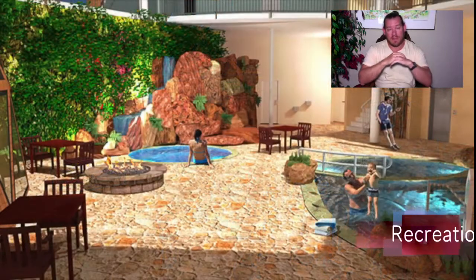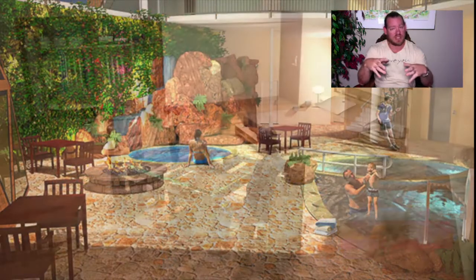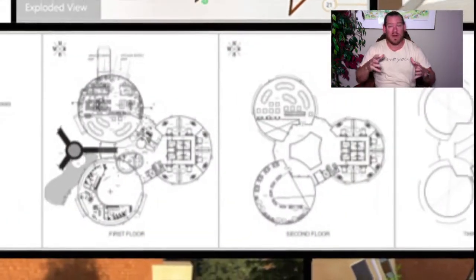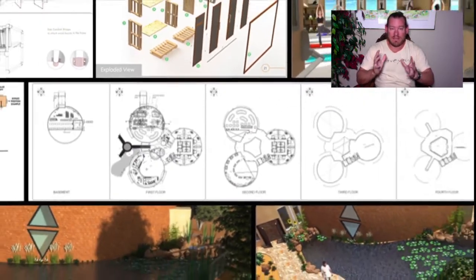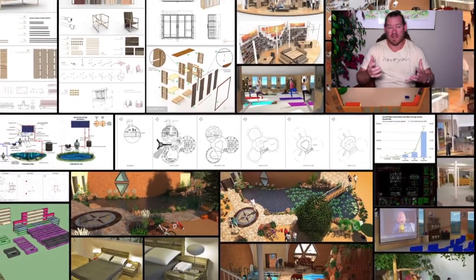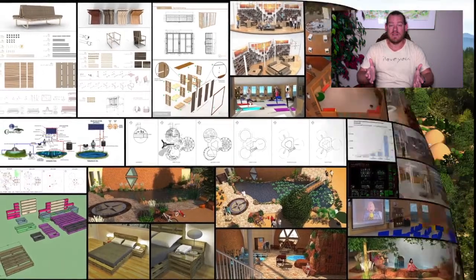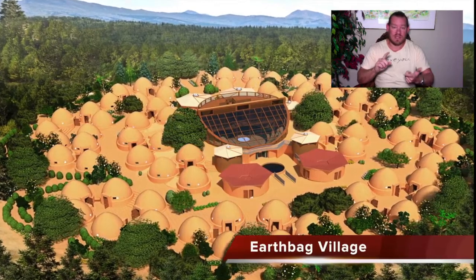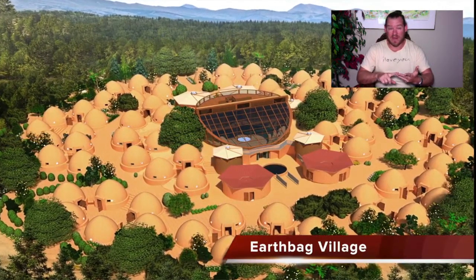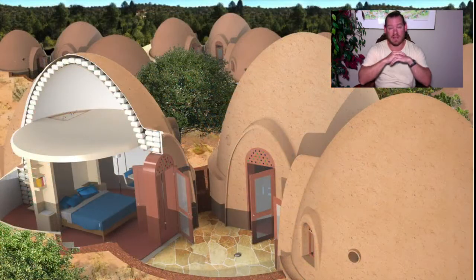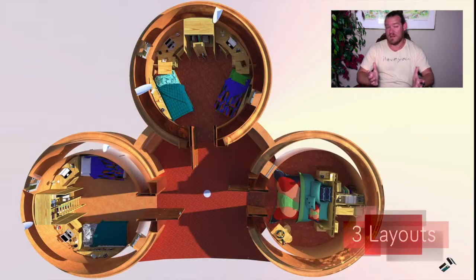Everything happening here — the different village models, the open source education program, highest good lifestyle aspects, social architecture, highest good economic models — all of these things are being put together to create a complete model of systems for sustainable community creation, covering all aspects of the human experience to create a sustainable civilization that will benefit all life on this planet.